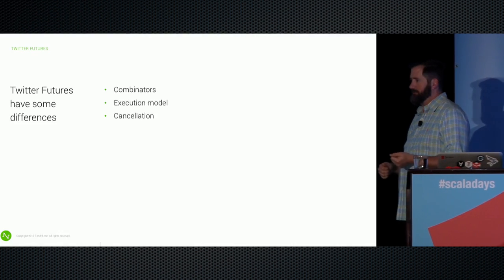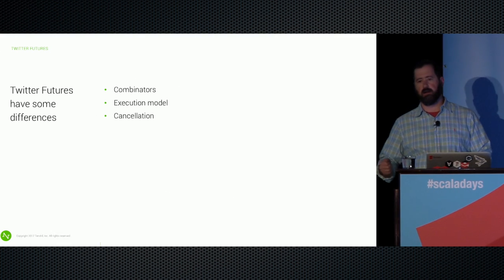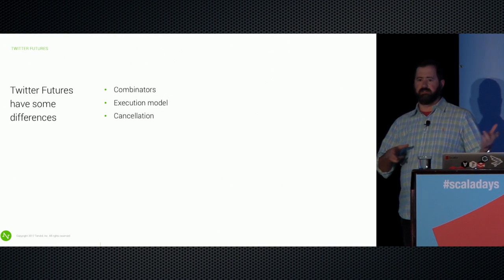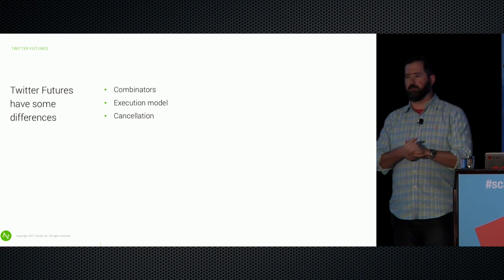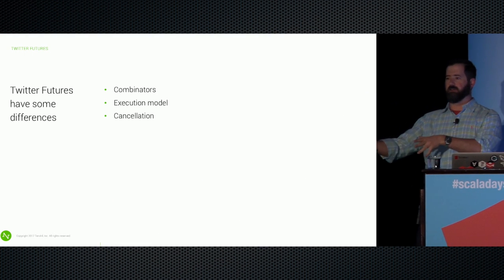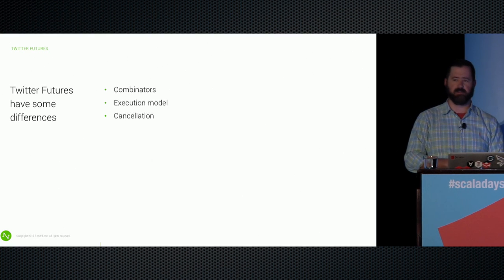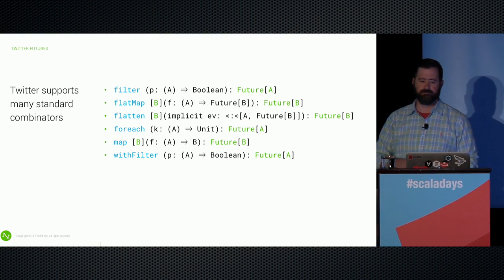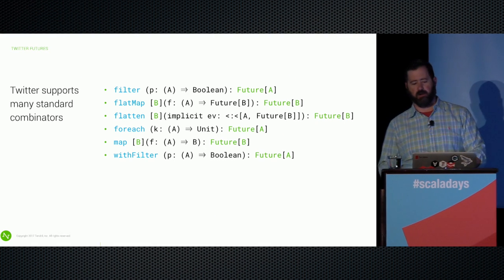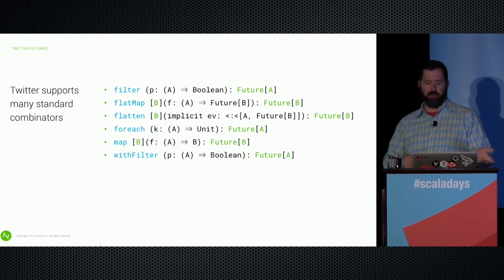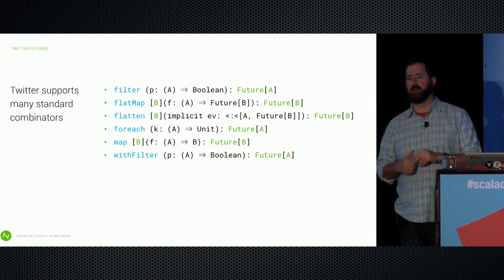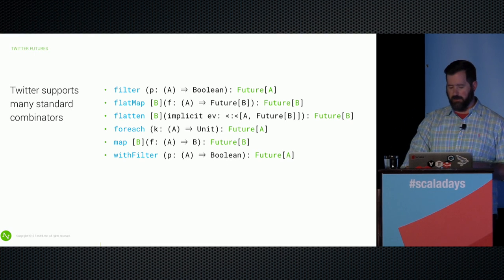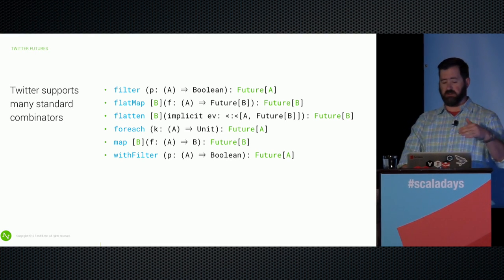Now let's compare how Twitter future is different. Twitter's future has some different combinators, a different execution model, and it supports cancellation. Twitter did some of this work and was part of the proposal to get things into the Scala Standard Library, but they haven't standardized on it. Cancellation is one of the big things they don't want to give up. A bunch of the standard combinators are still there and look pretty much the same — filters, flatMaps, maps — so we can still do for comprehensions. There's a little tiny difference I'll talk about later.